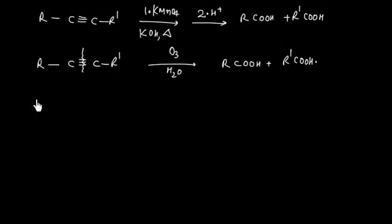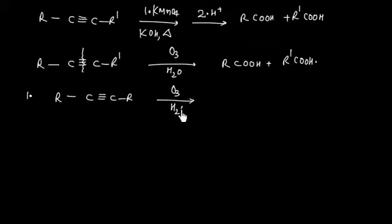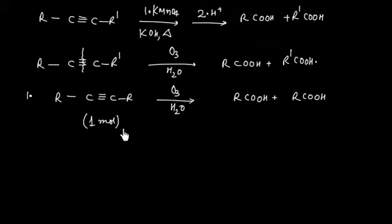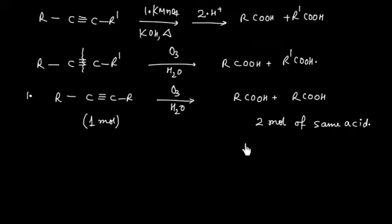Now, let us consider the following possibilities. We can have a symmetrical alkyne, and if we do ozonolysis, we will get two moles of the same acid. So if I take one mole of alkyne, finally I will have two moles of the same acid. That is, in this case we will get only one product.